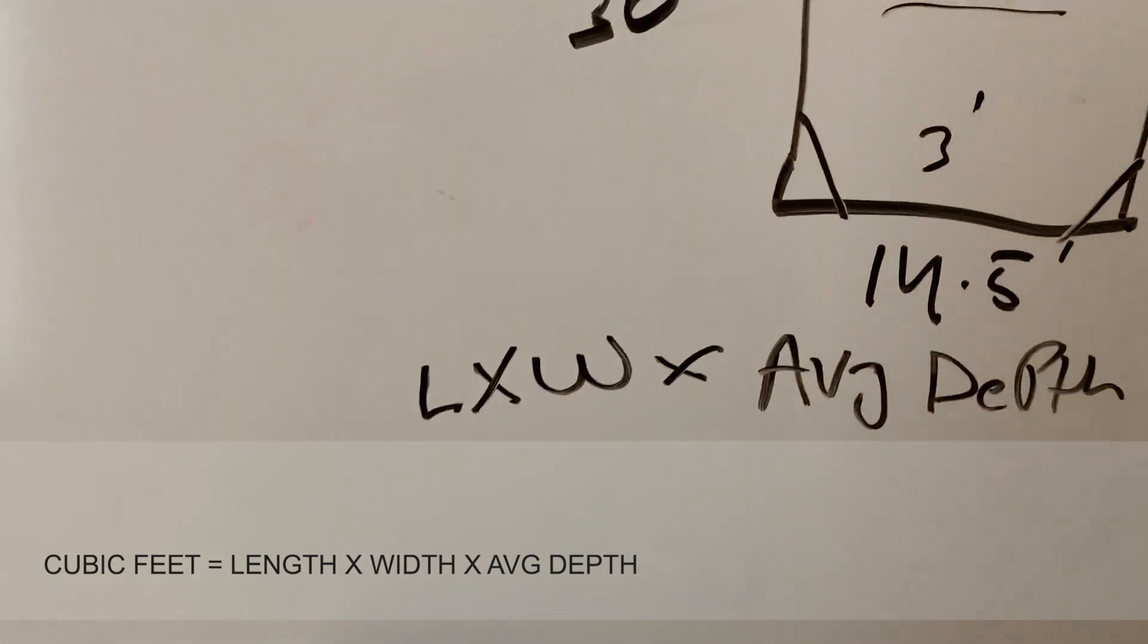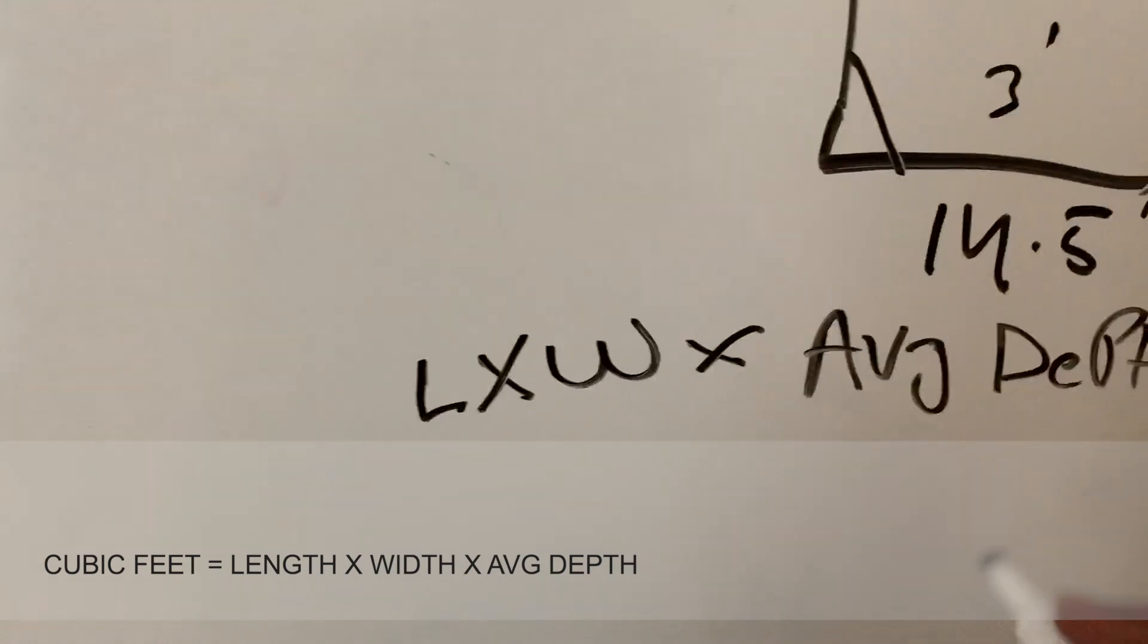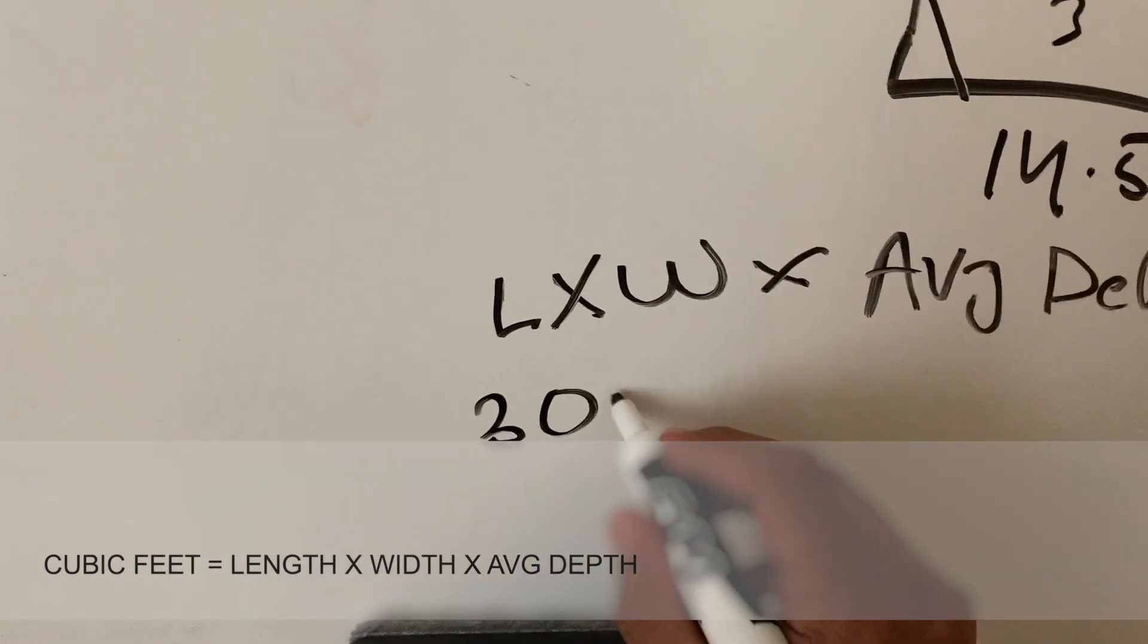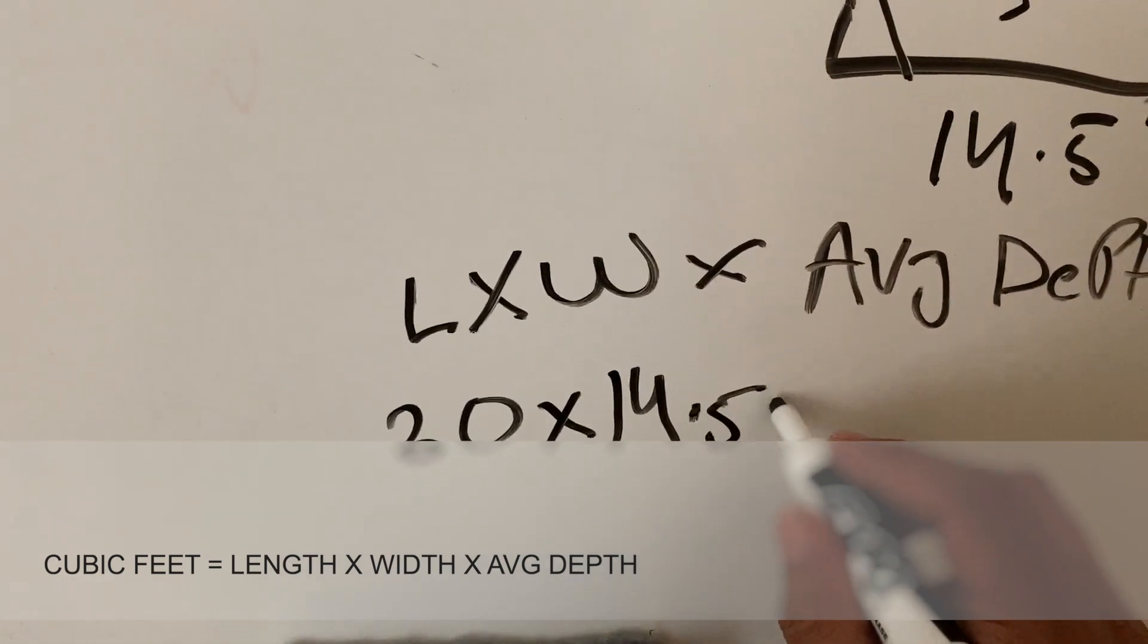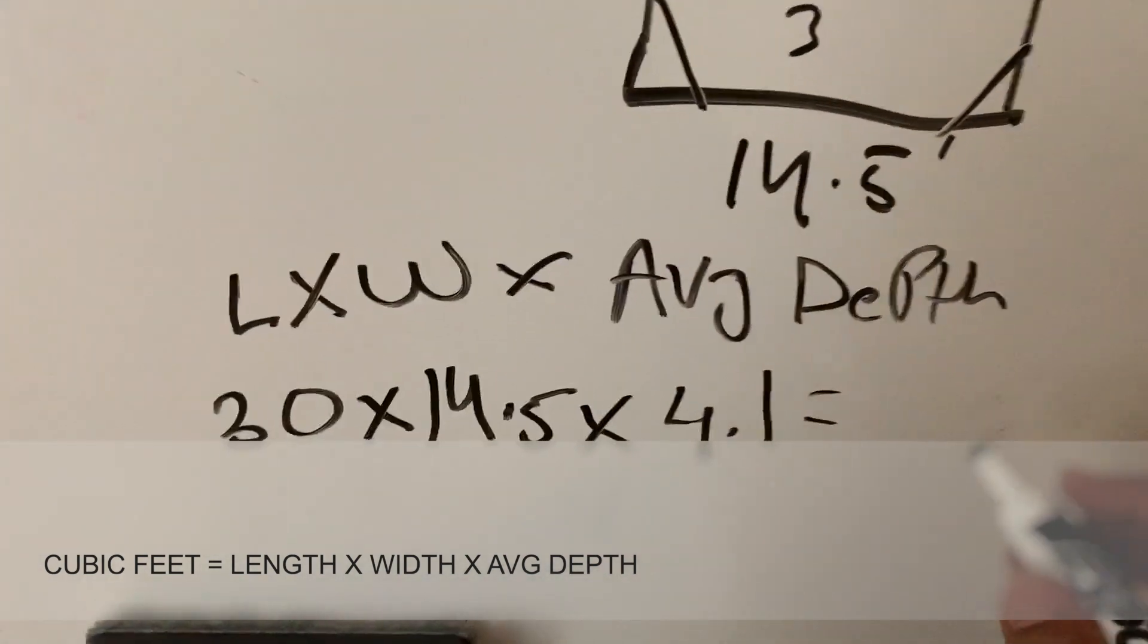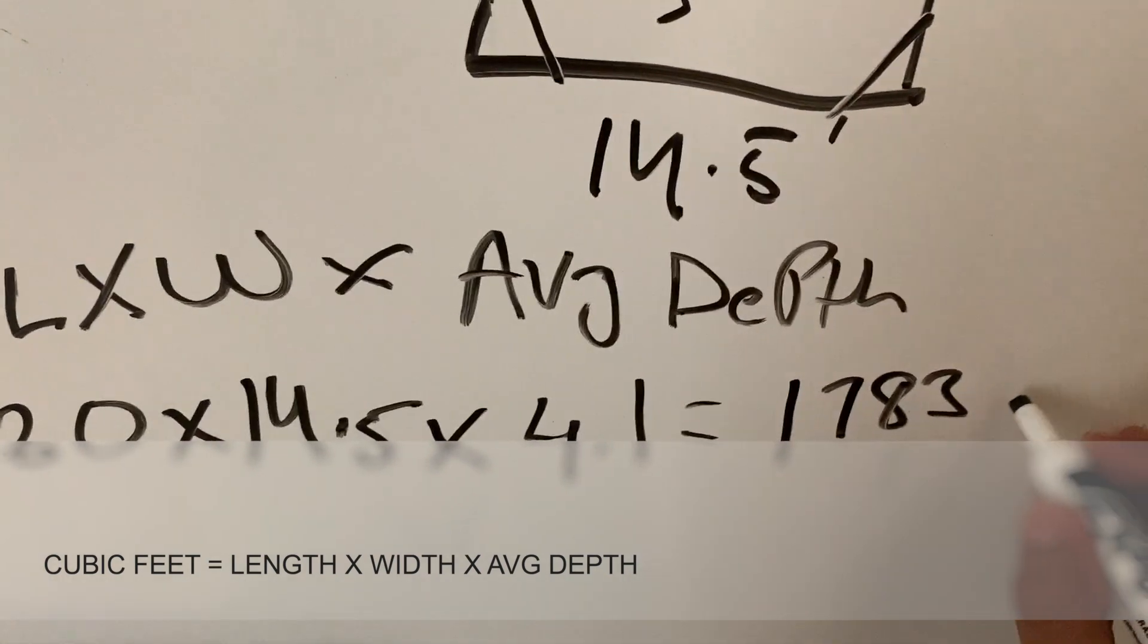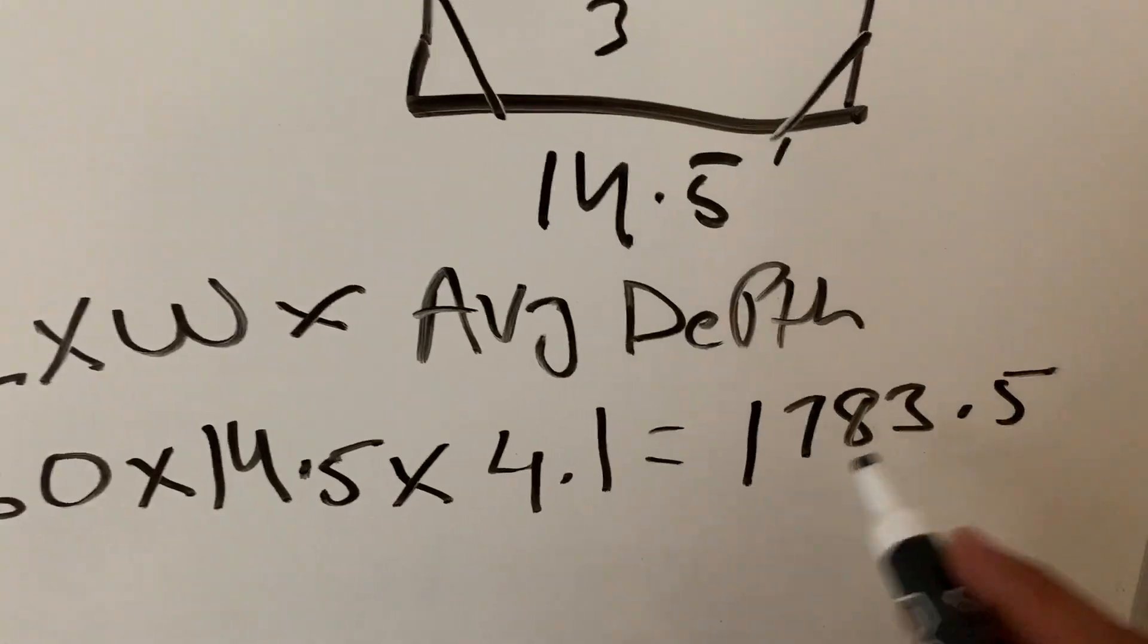You take that number. So in my case, my length is 30, my width is 14.5, and my average depth is 4.1. That comes out to be 1783.5. This number is the cubic feet of water that your pool holds.